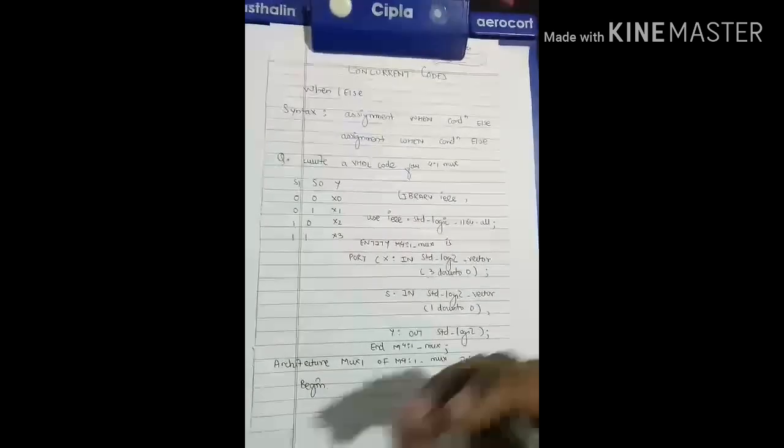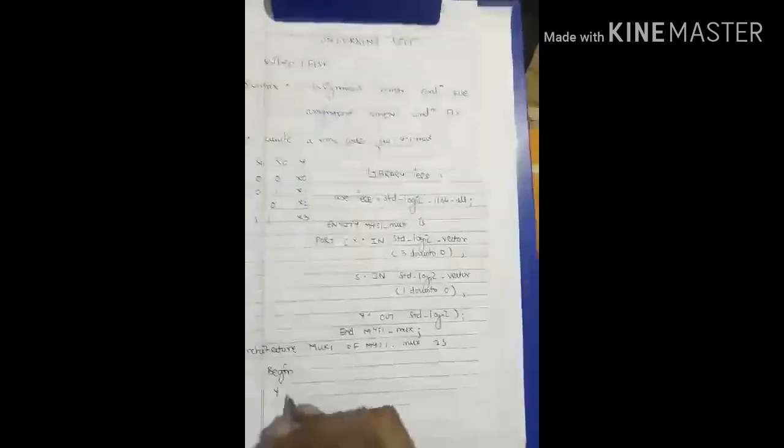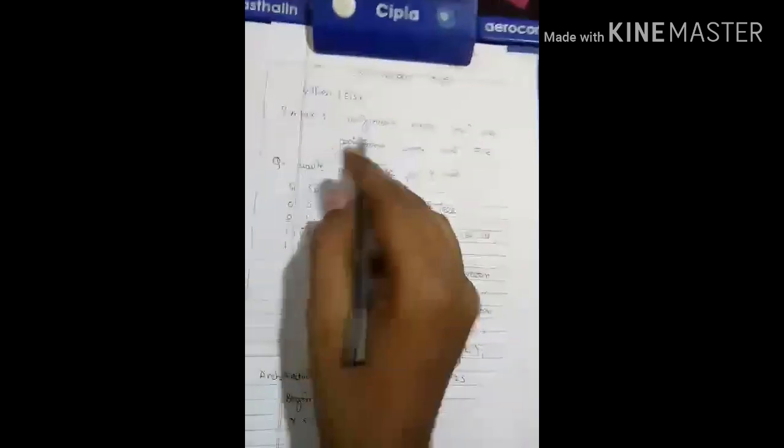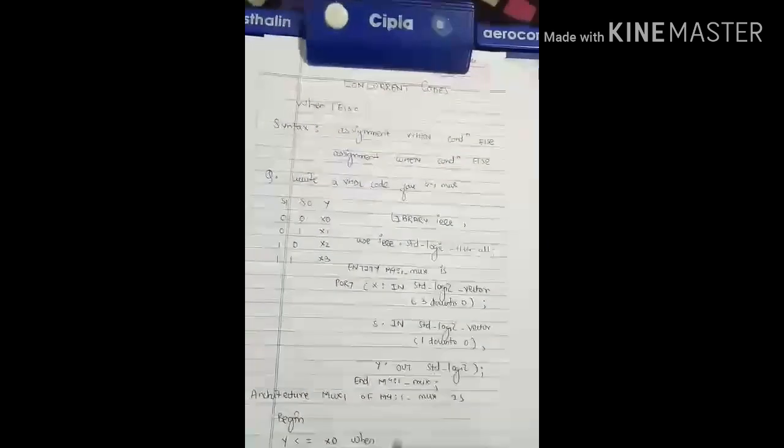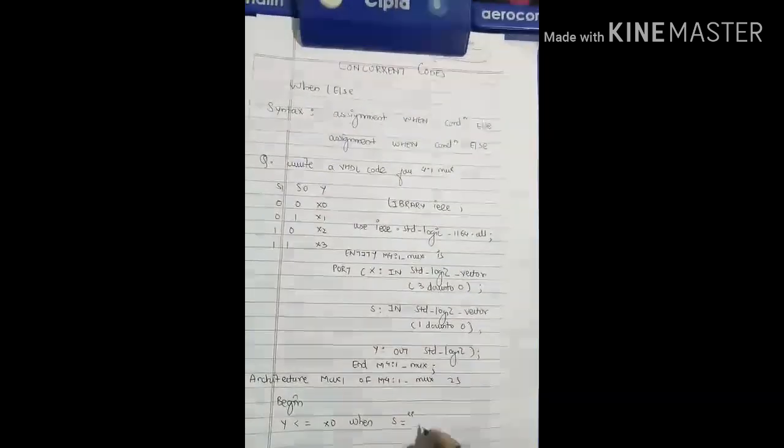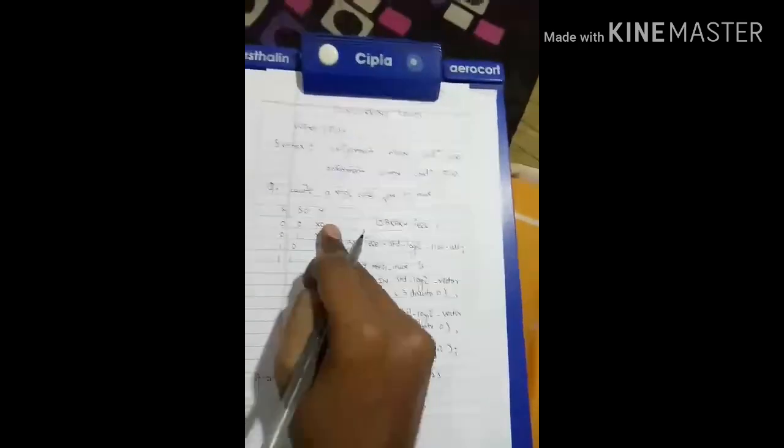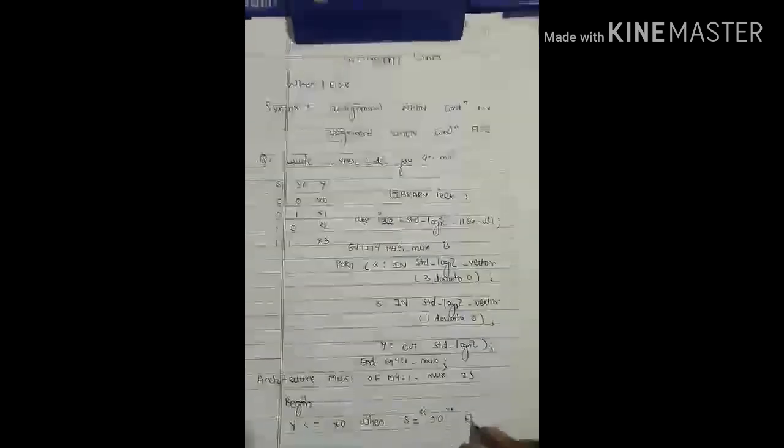Now we need to continue this with when-else statement. We need to write the output in the when-else form. We have: Y equals X0 when, now the condition is S equals 00. When S is equal to 00 then the output will be X0. That's why we have written X0 when S equals 00, else X1 when S equals 01,